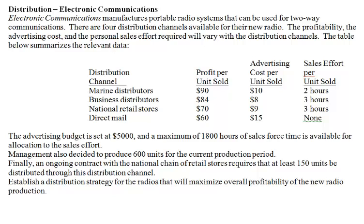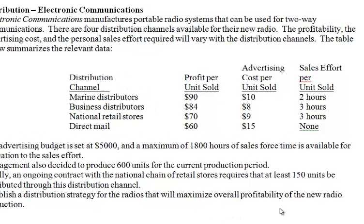In the electronic communications example, we will look at a problem of allocating one product among different distribution channels. Here we have one product, a radio for two-way communications, but four distribution channels. We need to decide how many should be allocated to each distribution channel, and we want to maximize the total profit.